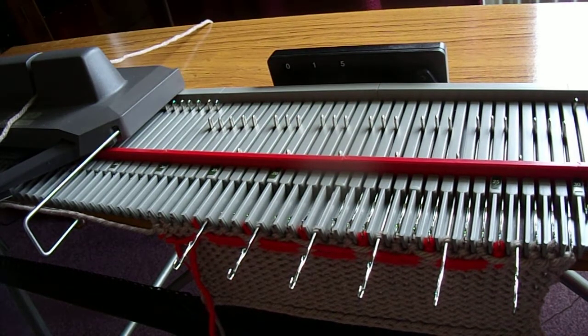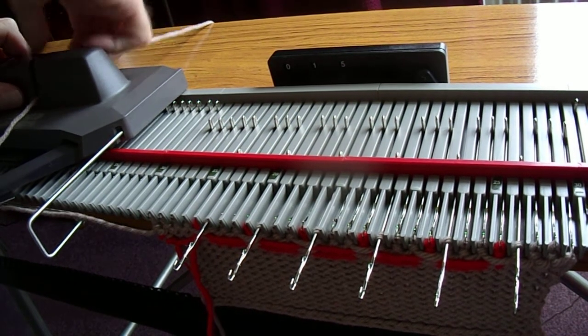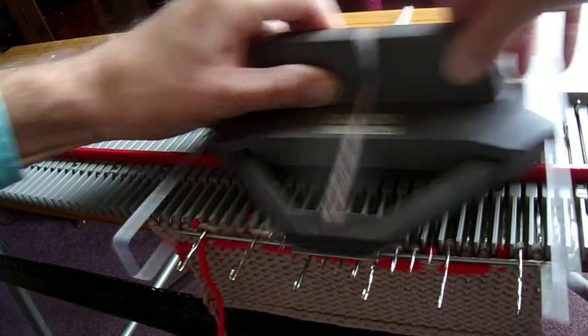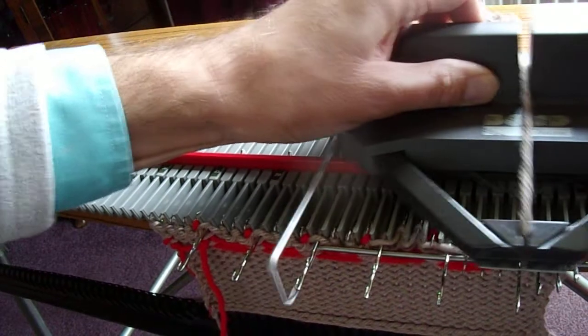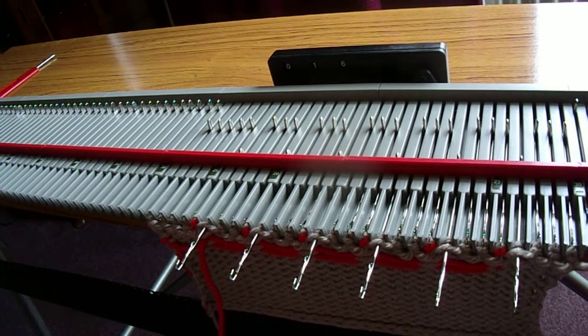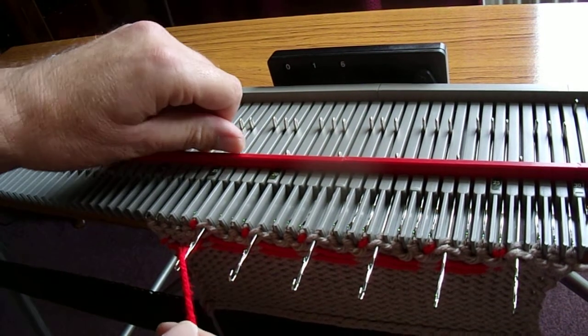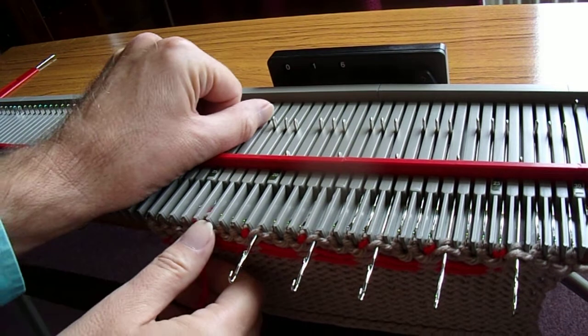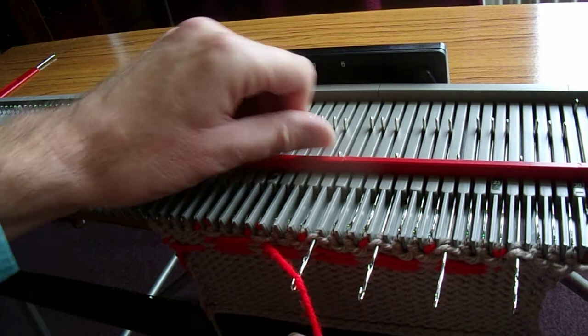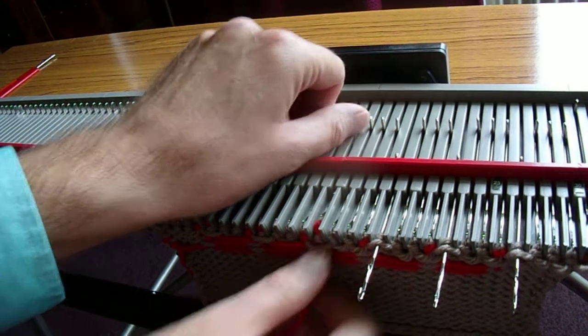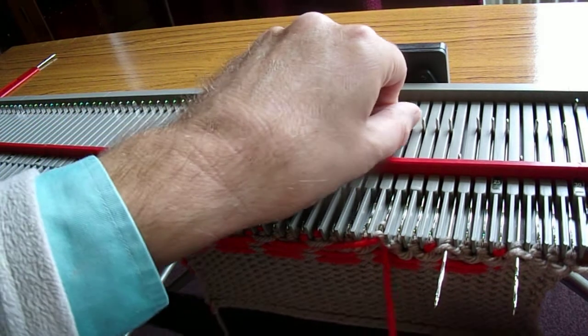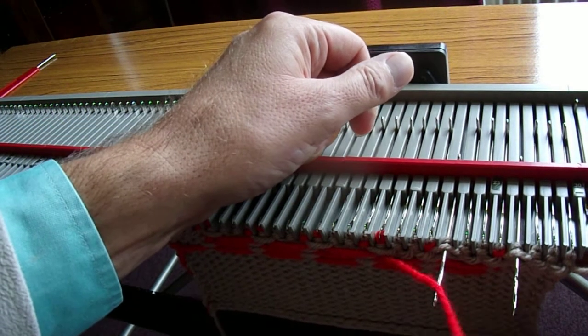Just double-check that they are fully out in hold or they will jam the carriage. And back we go. You do have to keep the speed down when you are going across a row like that because you can bounce a needle out.